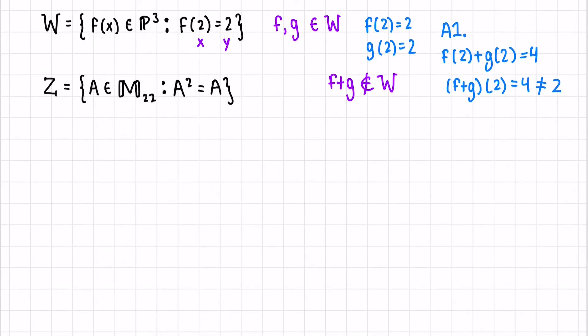Z contains all 2 by 2 matrices that have the property that the matrix squared equals itself. So let's say that M is an element of Z. Let's take a look at S1, which is closedness under scalar multiplication. This means that A times M, where A is just a scalar, should be included in our set. Is this true?